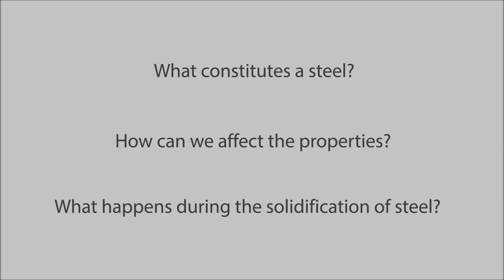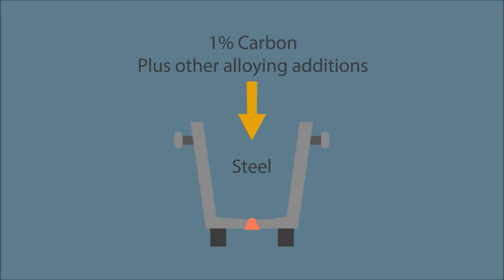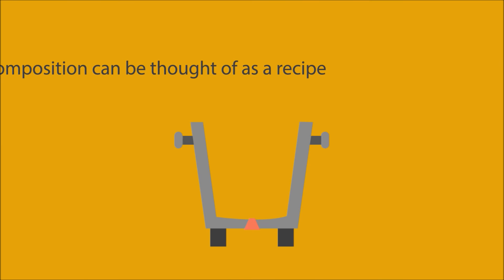Steel metallurgy. Steel is the most widely used metal, but what constitutes a steel, how can we affect its properties, and what happens during the solidification of steel? These are key insights we will try to uncover in this module. Steel is primarily iron with up to one percent carbon plus other alloying additions. In the majority of steels, alloying additions total less than five percent, but in some steels this can be as great as fifty percent.